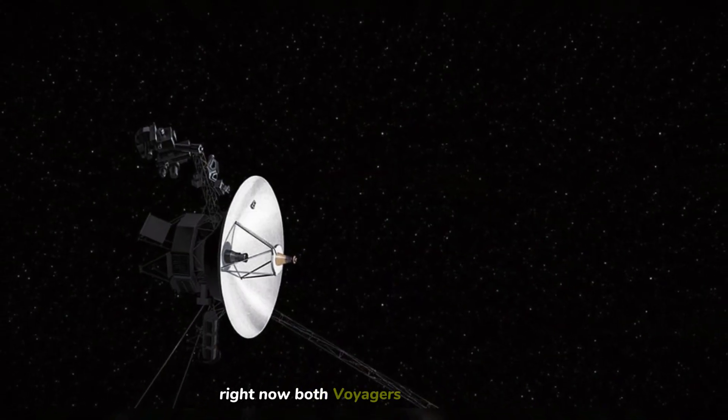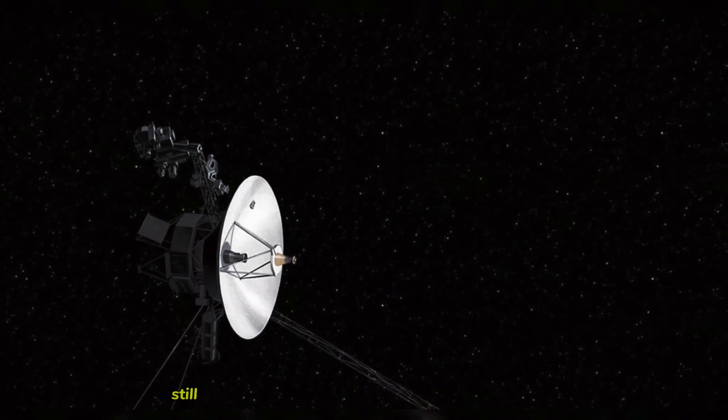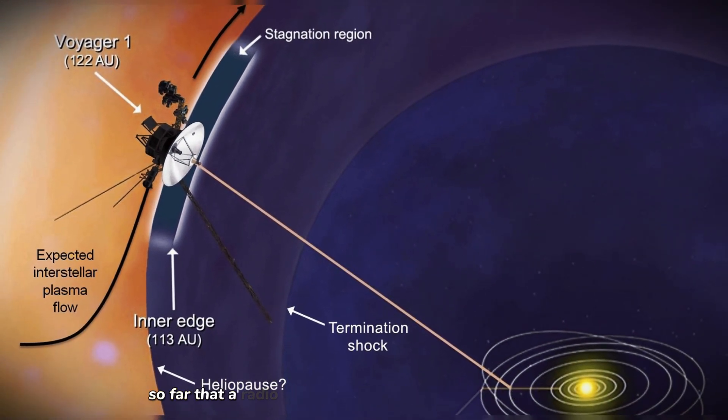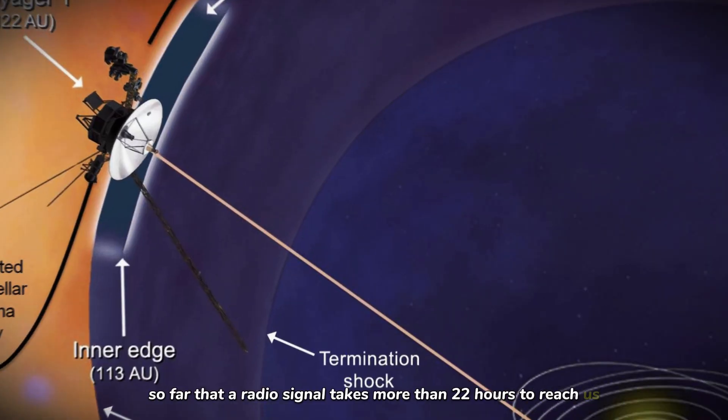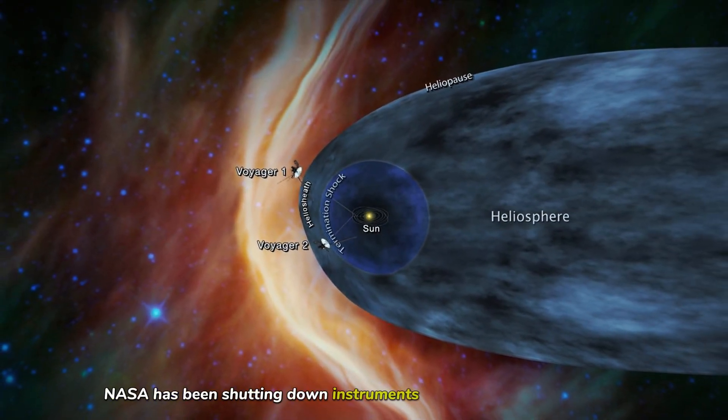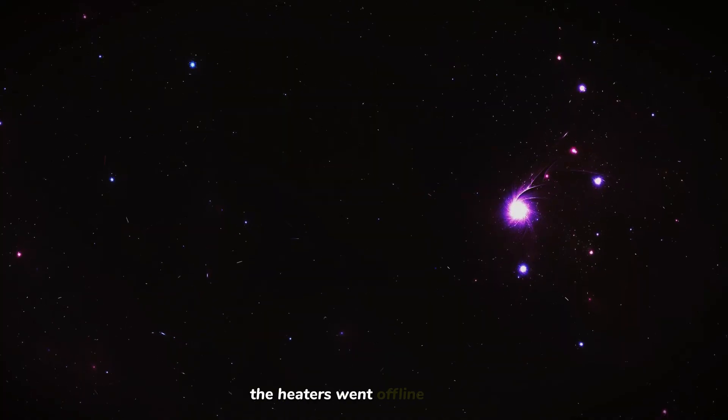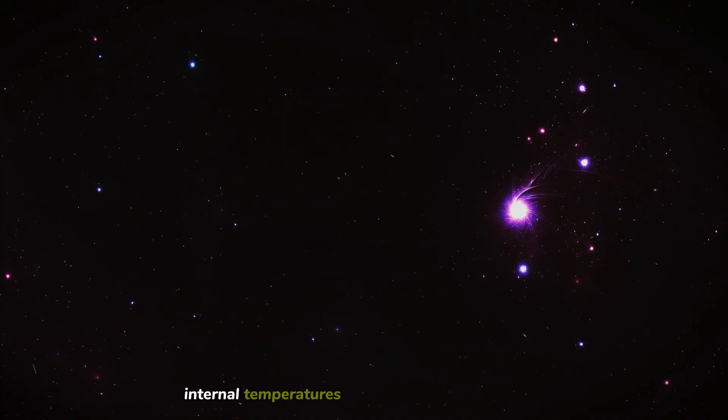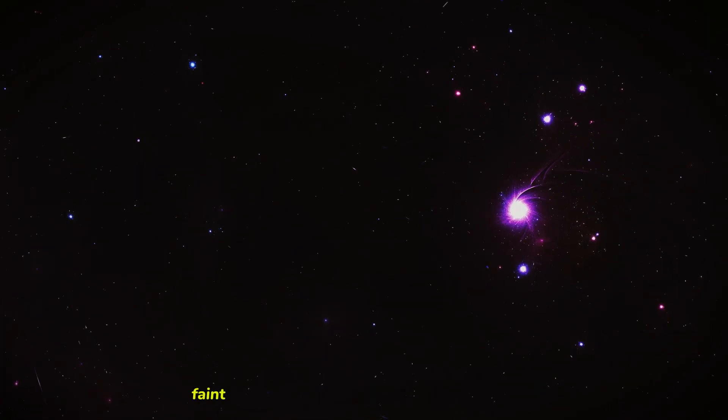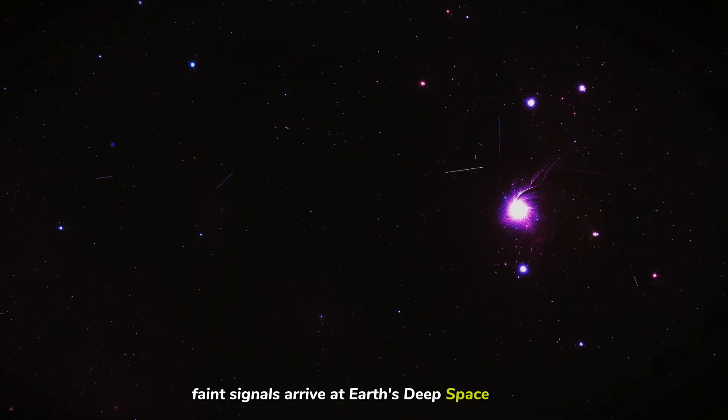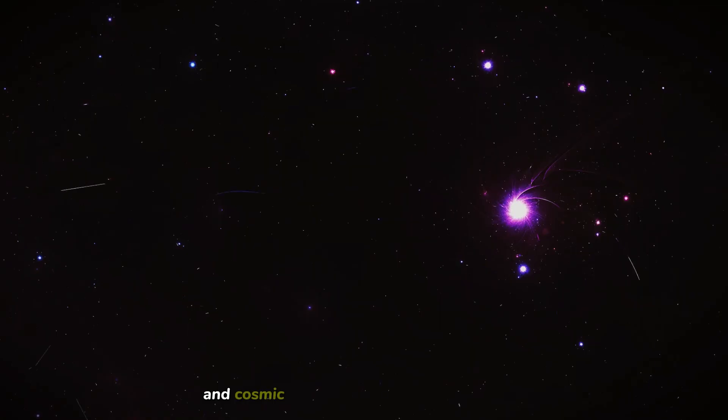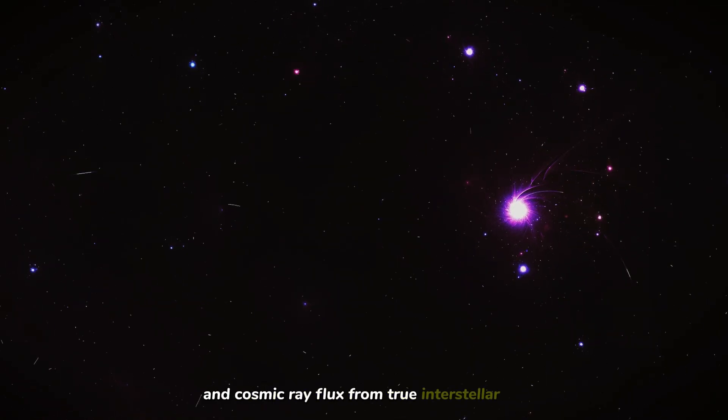Right now, both Voyagers are still out there, still transmitting. They're over 15 billion miles from Earth, so far that a radio signal takes more than 22 hours to reach us. Their power is fading. NASA has been shutting down instruments one by one to conserve energy. The heaters went offline years ago. Internal temperatures have dropped to near freezing. But still, they transmit. Every day, faint signals arrive at Earth's deep space network, carrying measurements of plasma density, magnetic field strength, and cosmic ray flux from true interstellar space.